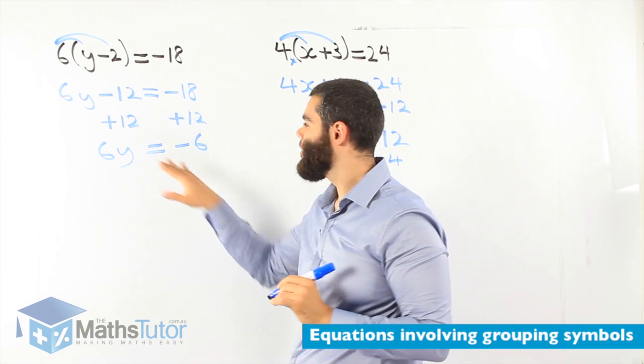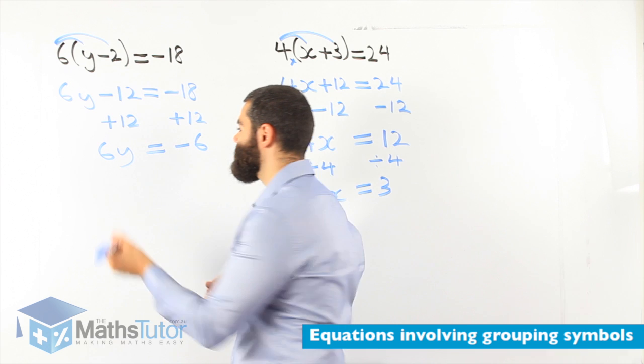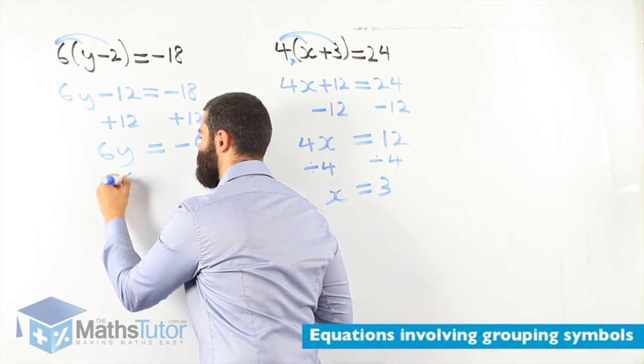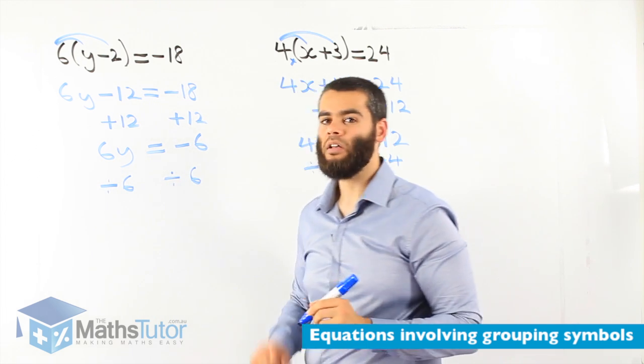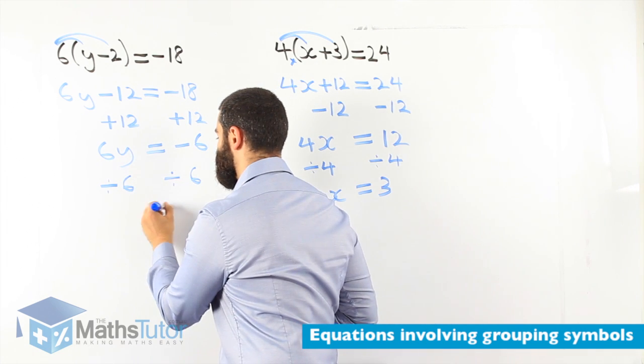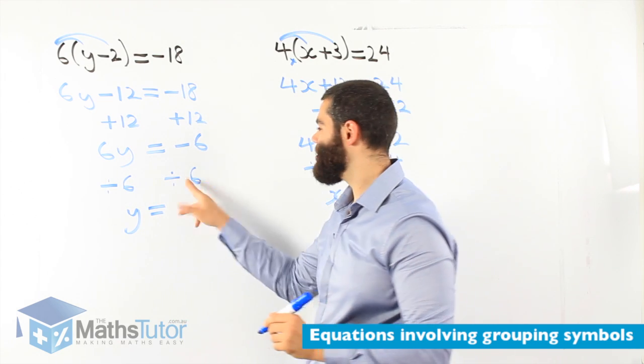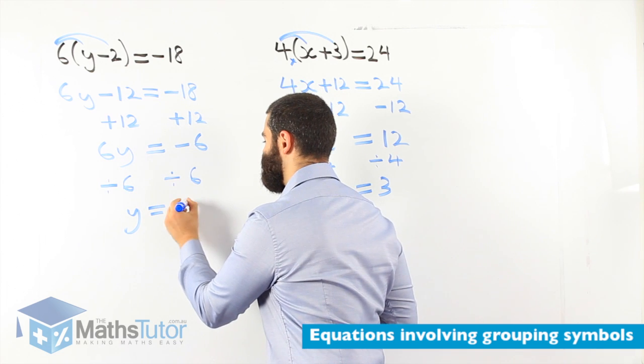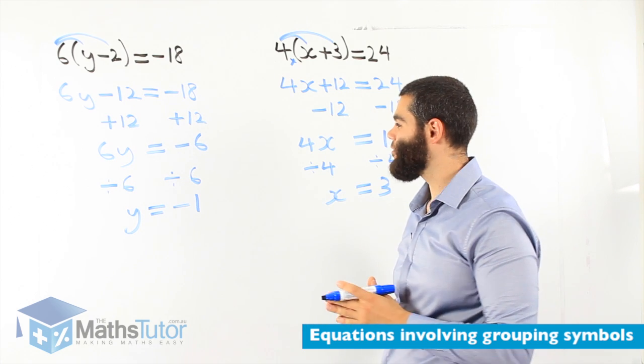We haven't finished yet. We would like to know only y. So, 6y is 6 times y. So, we divide by 6 and divide by 6 here as well. 6 divided by 6, we're left with 1y. And negative 6 divided by 6 is negative 1. So, our answer is y equals to negative 1.